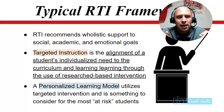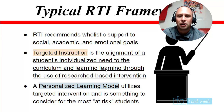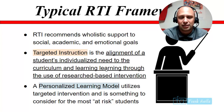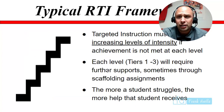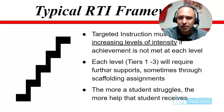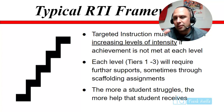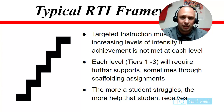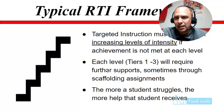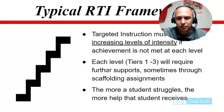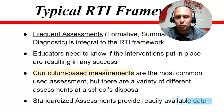A personalized learning model utilizes targeted intervention and is sometimes considered for the most at-risk students — it takes a lot of time and effort, which is why it's mostly reserved for those students. Targeted instruction must be met with increasing levels of intensity if achievement isn't met. You start with tier one at a basic intensity; if that doesn't work, you go to tier two with more intensity, and then tier three with even more. The more a student struggles, the more support that student will need.